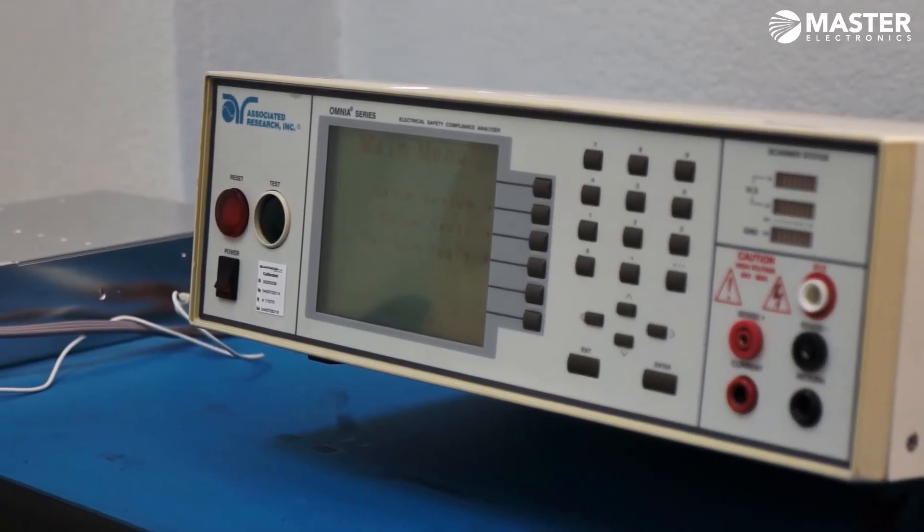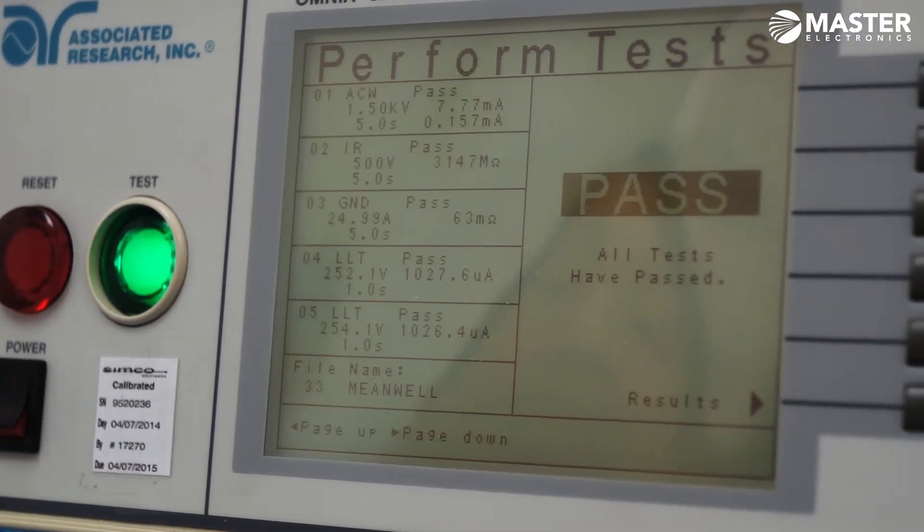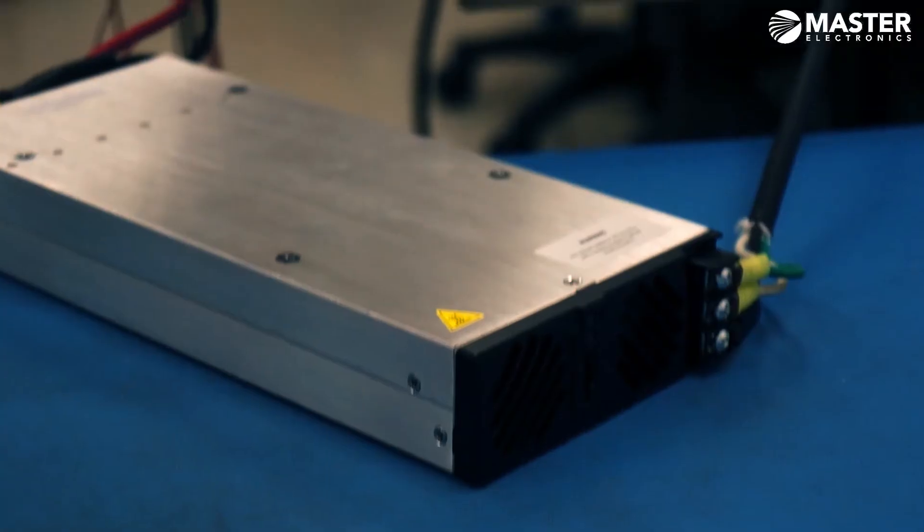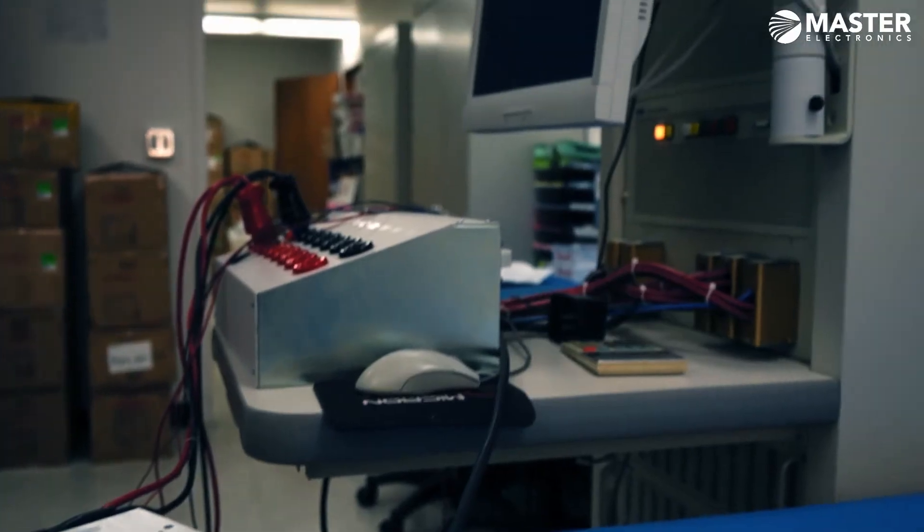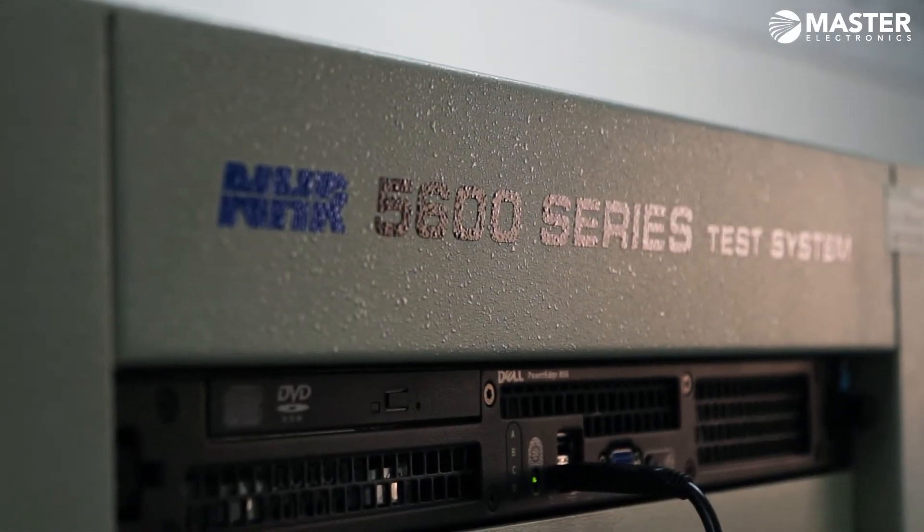After successful completion of the high pot test, each unit moves to our final test system for functional testing and voltage adjustment. Once each voltage is measured at the proper level, the balance of the test is completed.